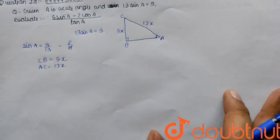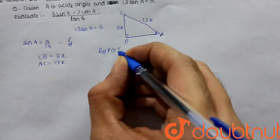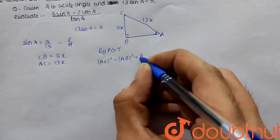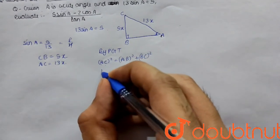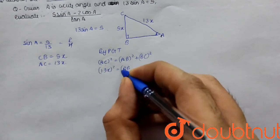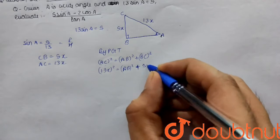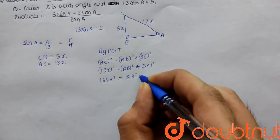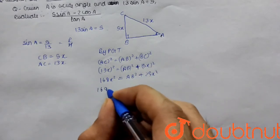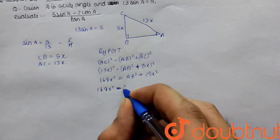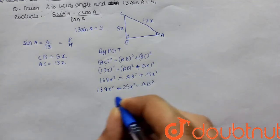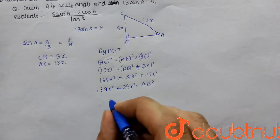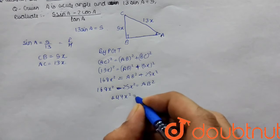Since the angle at B is 90 degrees, we can apply the Pythagorean theorem: AC² equals AB² plus BC². Substituting, we get 13x whole square equals AB² plus 5x whole square, so 169x² equals AB² plus 25x². Therefore, AB² equals 169x² minus 25x², which gives 144x².